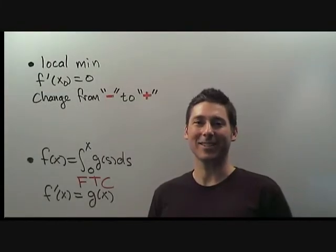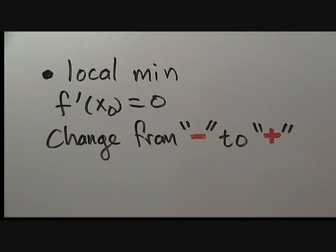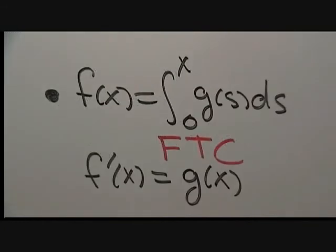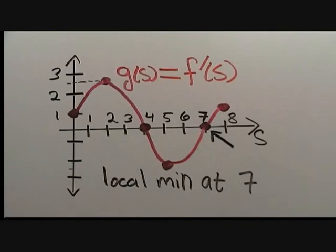Let's do a quick recap. First, we use the fact that f will have a local minimum where f' is equal to 0 and f' changes sign from negative values to positive values. Then, we use the fundamental theorem of calculus to compute f' equals g of x. Finally, we use the fact that we were given the graph of f' to locate the only place where f' is 0 and changes sign from negative to positive values.